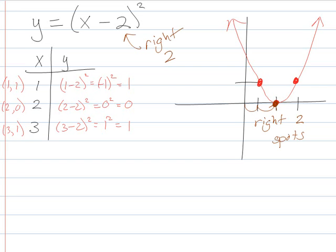So our vertex, our new vertex is now 2, 0, and our new axis of symmetry is now x equals 2. Just like that.